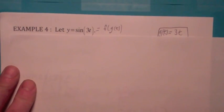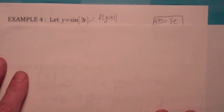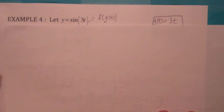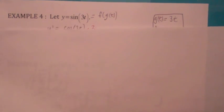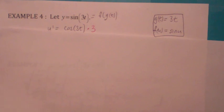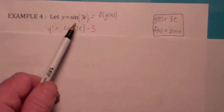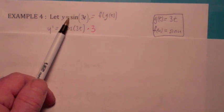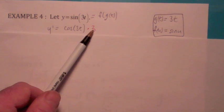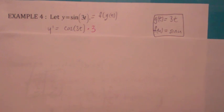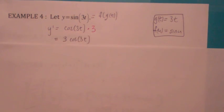This can be thought of as the composition of two functions: y equals the sine of t. The inside function is g of t equals three t, and the outside function would be sine of u. So the derivative is the derivative of the outside — cosine — evaluated at the inside: cosine of three t. Then you multiply by the derivative of the inside function, so it's cosine of three t times three, which can be written as three cosine three t.